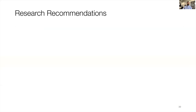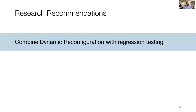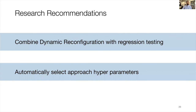We have two research recommendations for future work. First, combining dynamic reconfiguration with other regression testing techniques — such as regression test selection or test case prioritization — might further reduce the overall testing time of microbenchmarks. Second, automatically selecting the approach's hyperparameters — such as the minimum number of warm-up iterations and forks, the parameters for the stoppage criteria, and the sliding window size — is an interesting future direction.